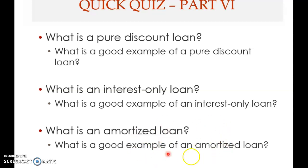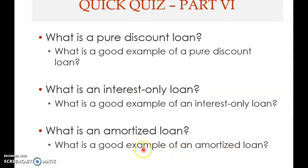A good example of an amortized loan would be commercial loans like car loans or a housing loan. These are all usually amortized loans.